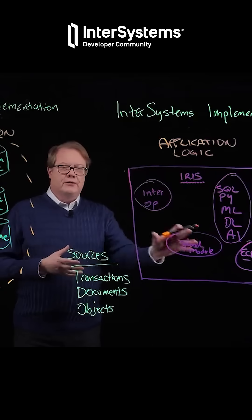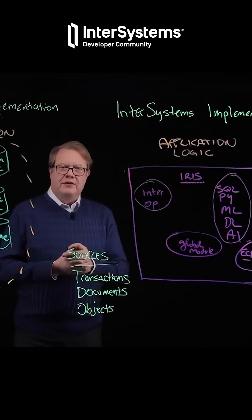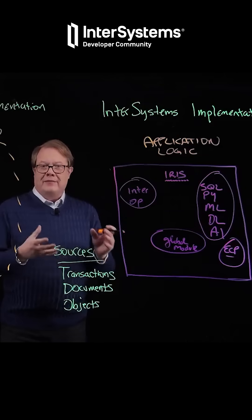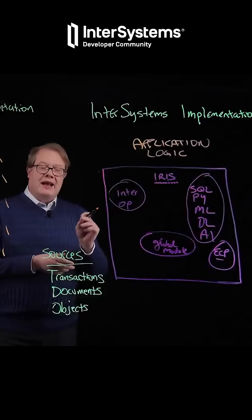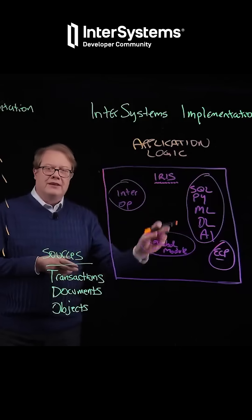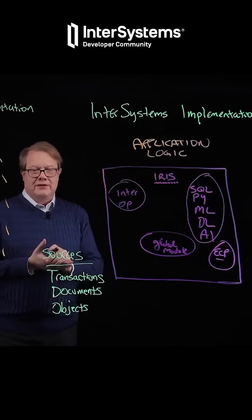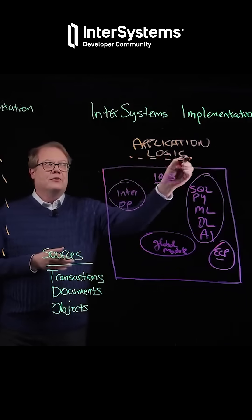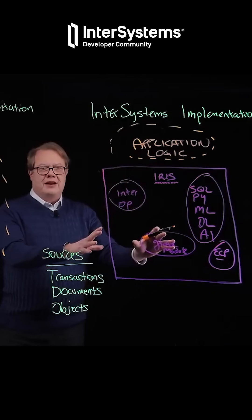Once the data gets into IRIS, we use the global module, which is what allows us to be multi-model, and then we cast that data for the application the way the application needs to see it. We do all of that off of a single individual copy of the data, and since it's all inside of IRIS, it's all managed through our high availability and business continuity services. The application developer really only has to worry about application logic and leave the data management to us.